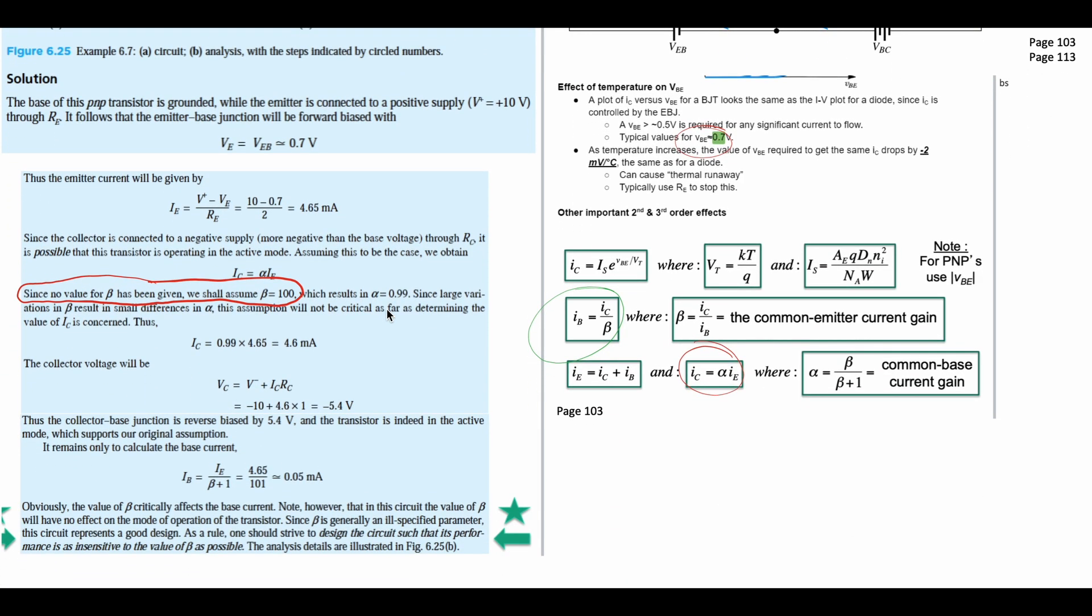We have more notes down here. Obviously, the value of beta critically affects the base current. Note, however, that in this circuit the value of beta will have no effect on the mode of operation of the transistor. Since beta is generally an ill-specified parameter, this circuit represents a good design. As a rule, one should strive to design the circuit such that its performance is as insensitive to the value of beta as possible. That way we're not relying on beta. If beta changes, it's still going to be okay.